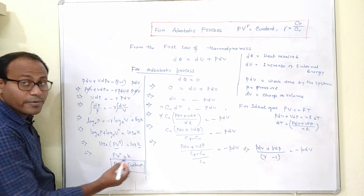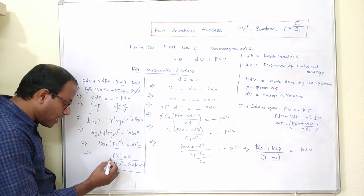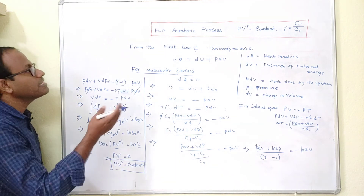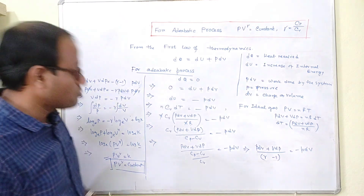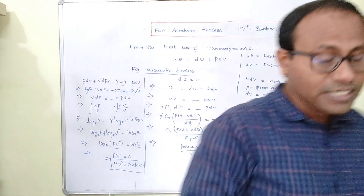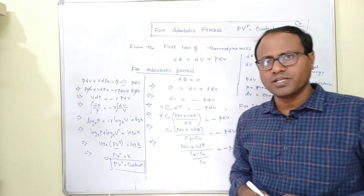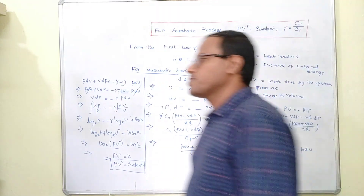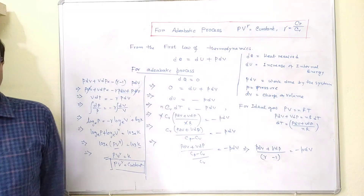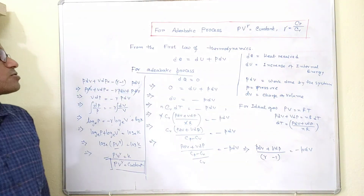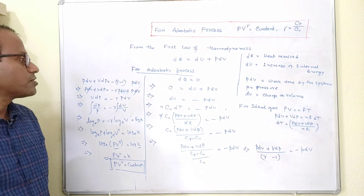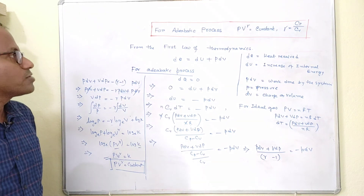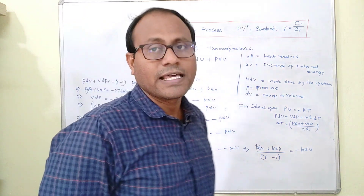So this relation PV to the power gamma equals constant is now proved. This question carries three marks. Students, next class we will continue further.